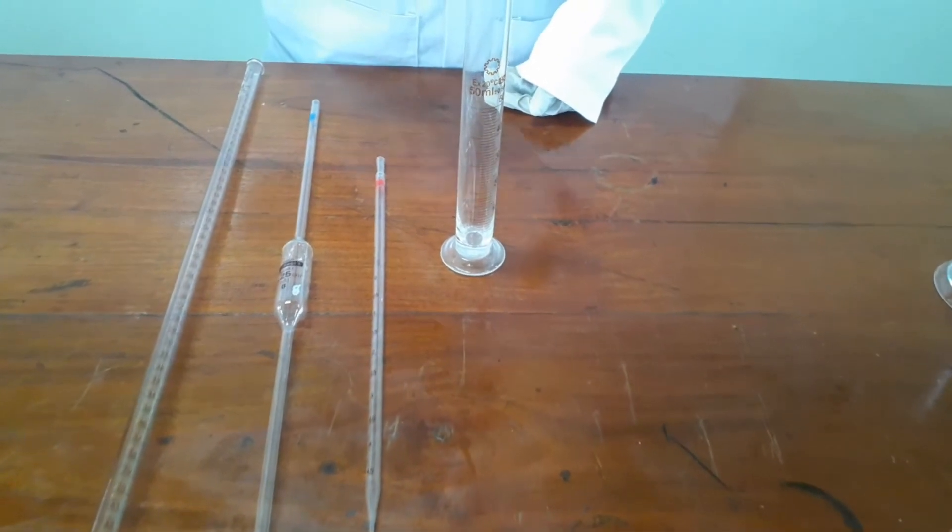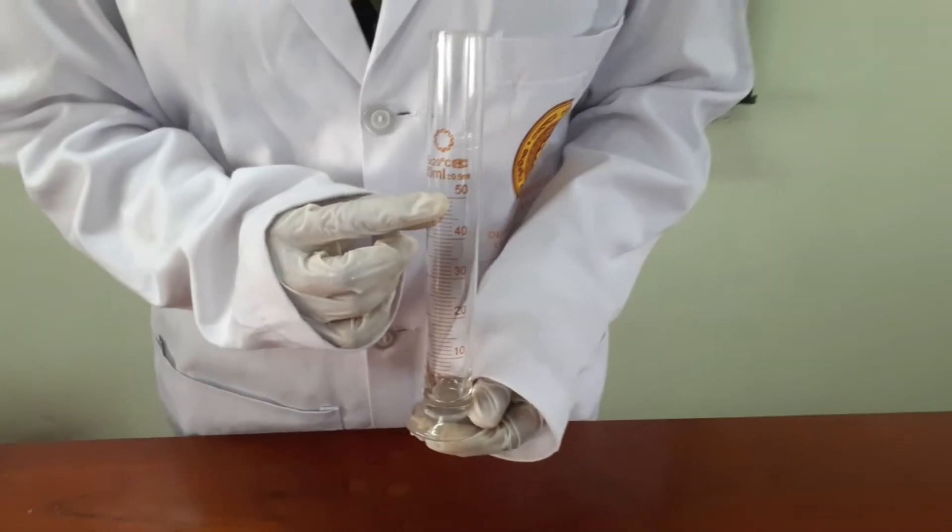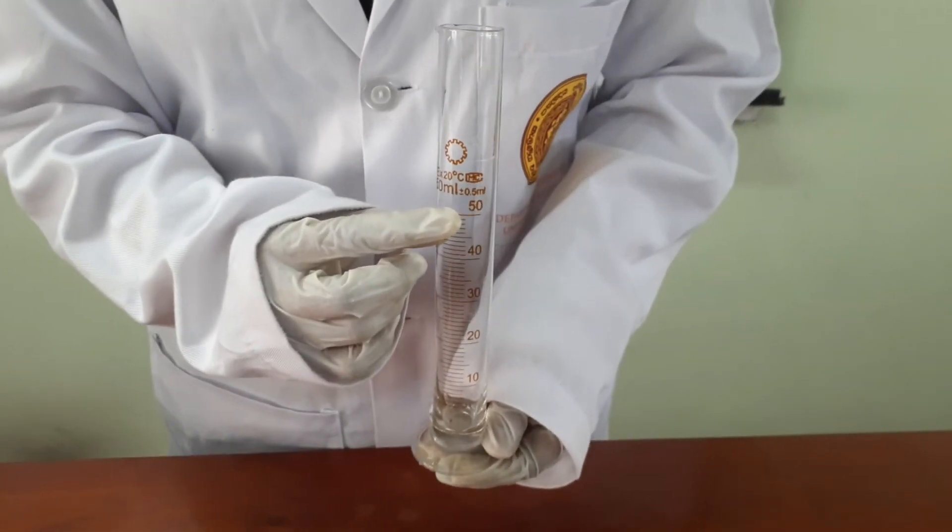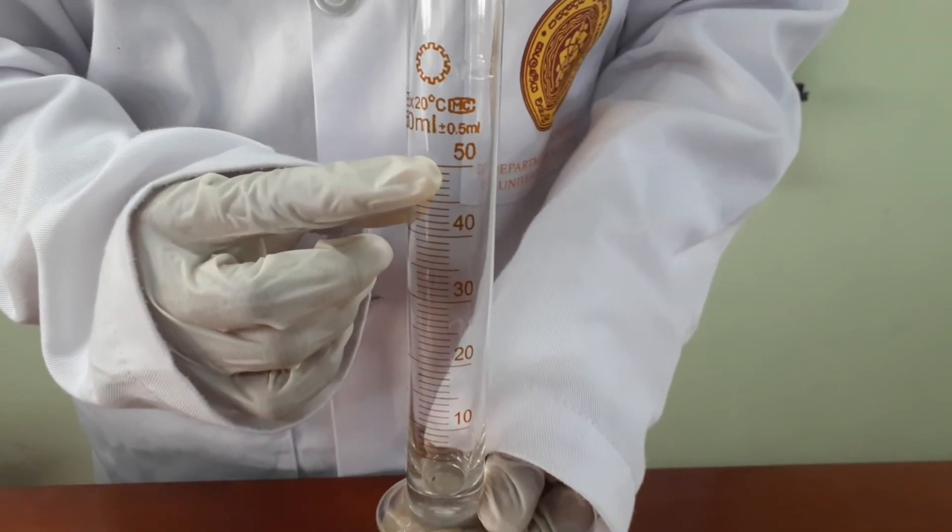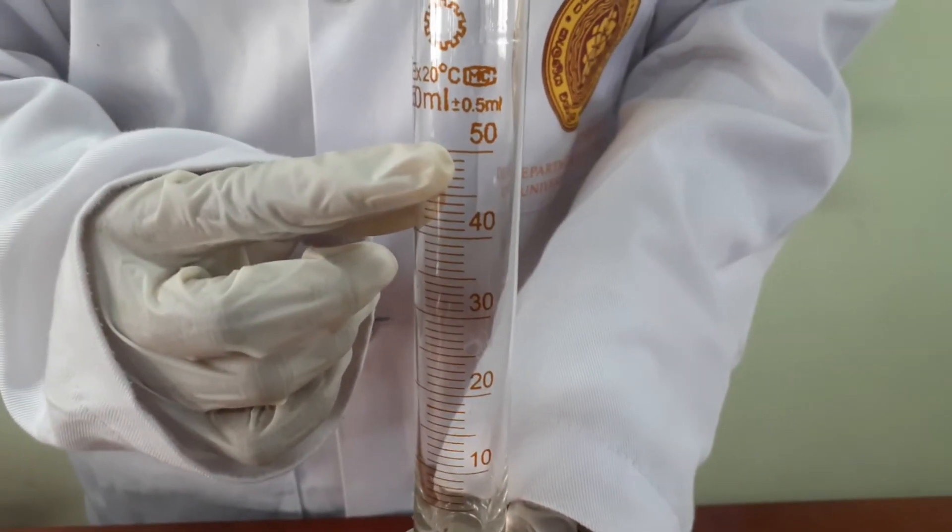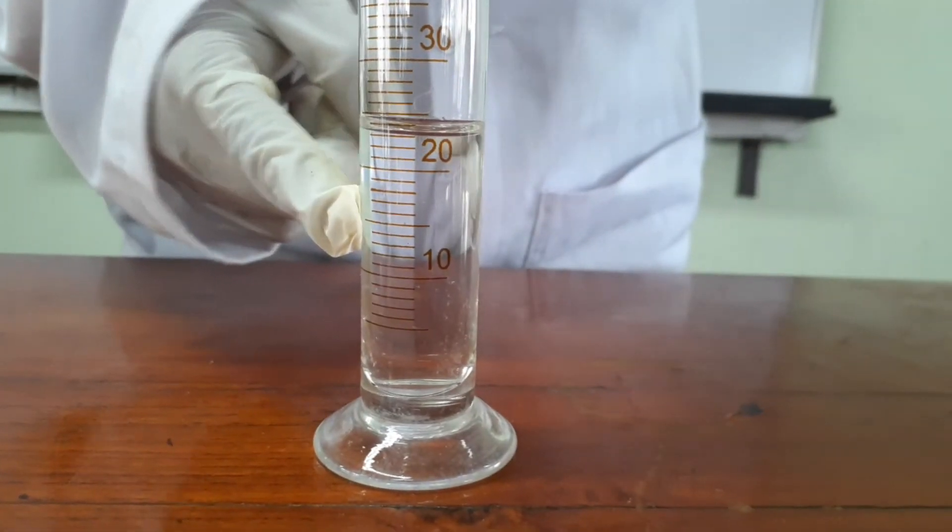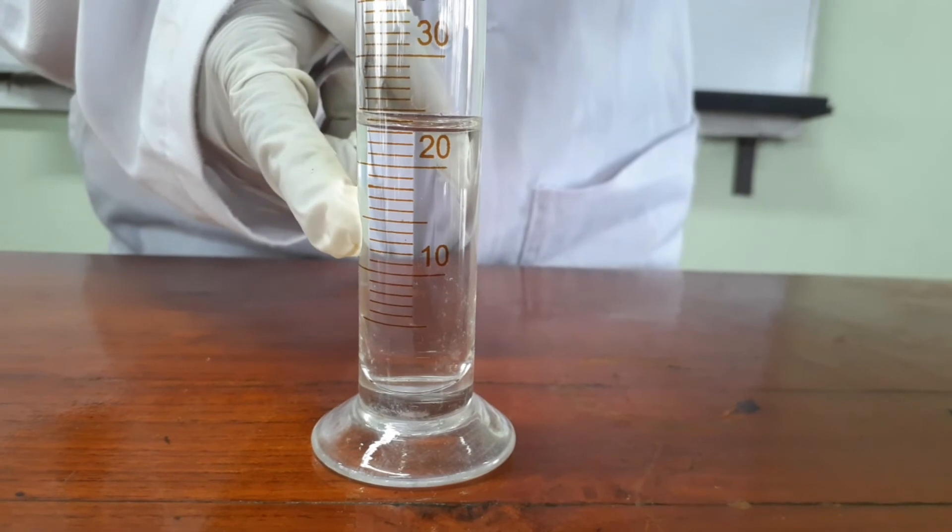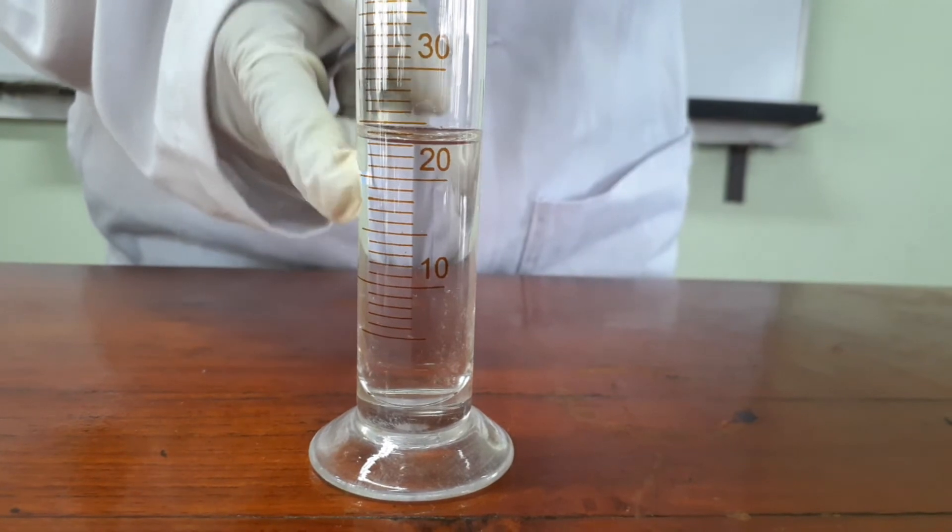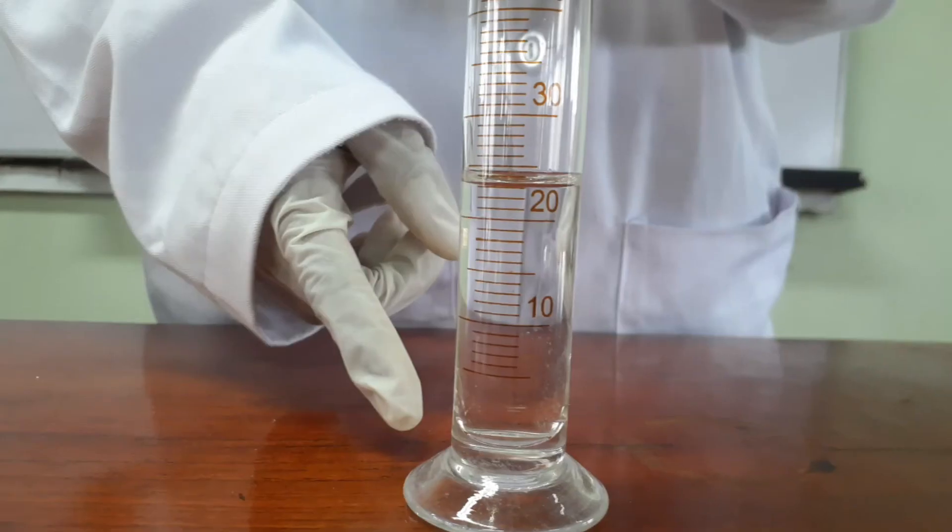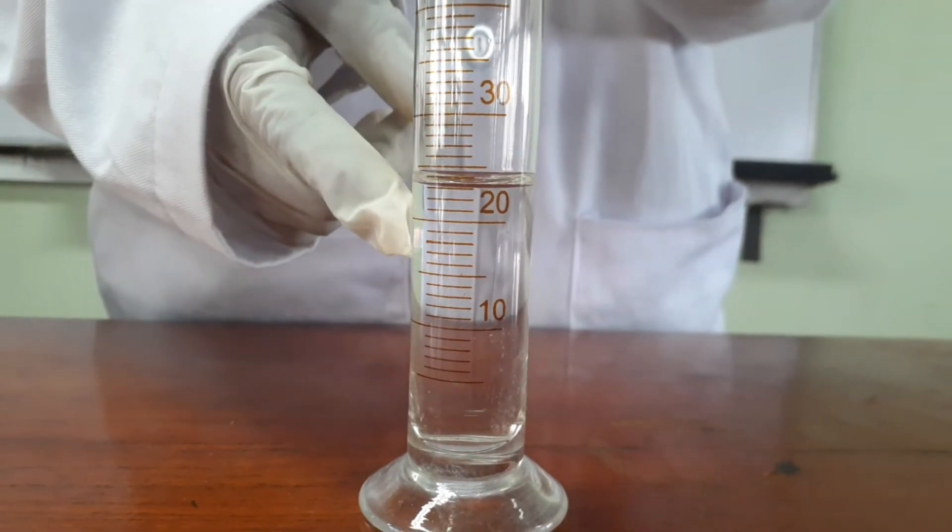Let's look at how to use this measuring cylinder. We can read up to one decimal place by using this measuring cylinder. The reading of this volume is 23 ml. As you can see, we need to read the meniscus properly in order to get the accurate result.